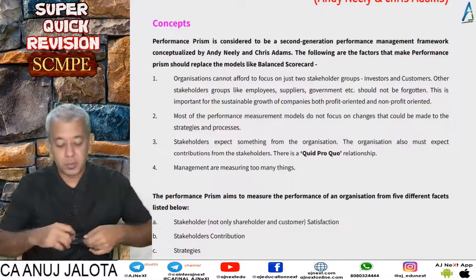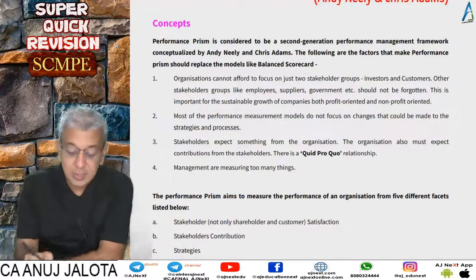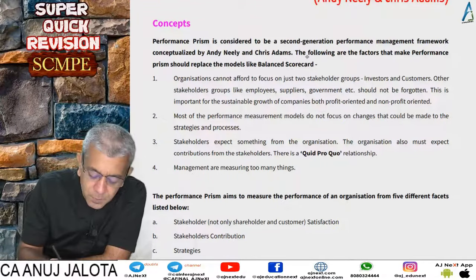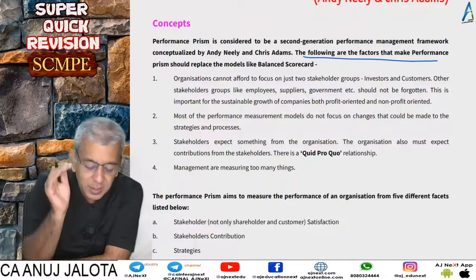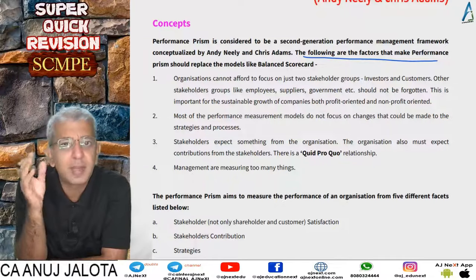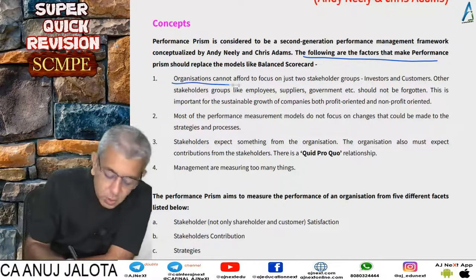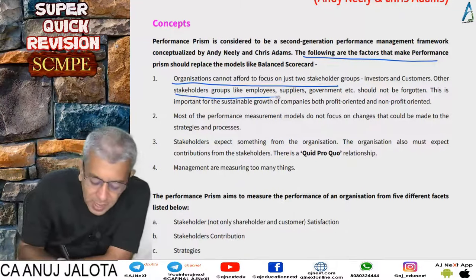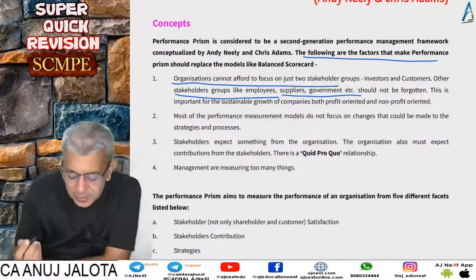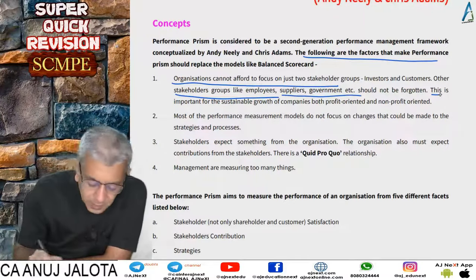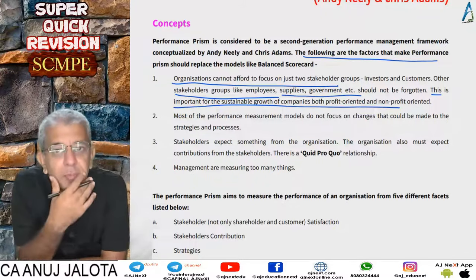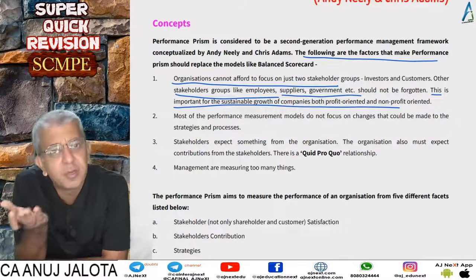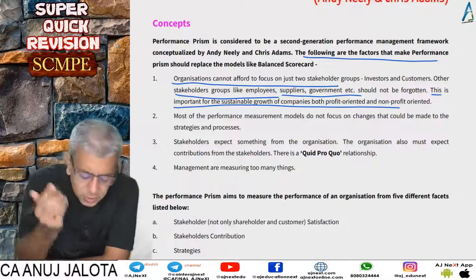Performance Prism is considered a second-generation performance management framework conceptualized by these two people. The factors that make Performance Prism a replacement for models like the Balanced Scorecard are: first, organizations cannot only focus on two stakeholders — investors and customers; other stakeholders like employees, suppliers, and government should not be forgotten. This is important for the sustainable growth of the company. It can also be applied to non-profit organizations.